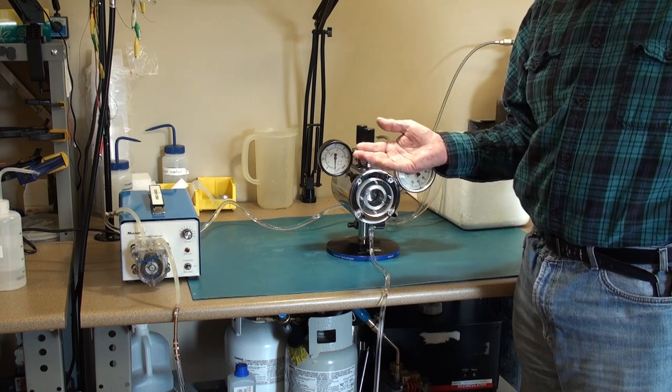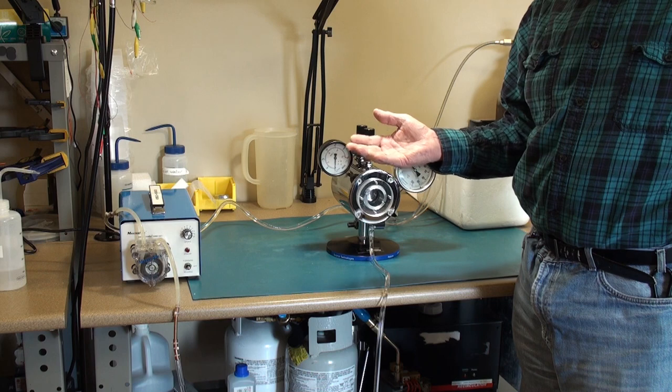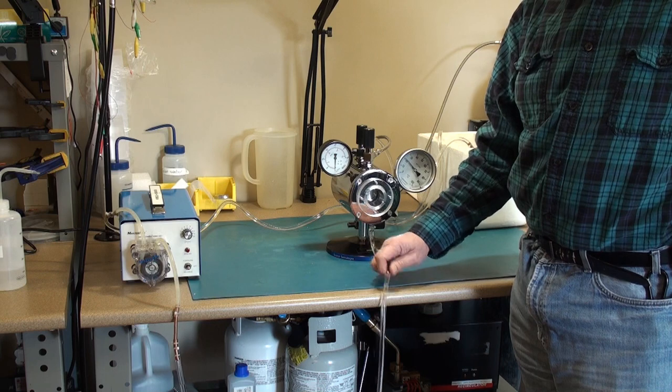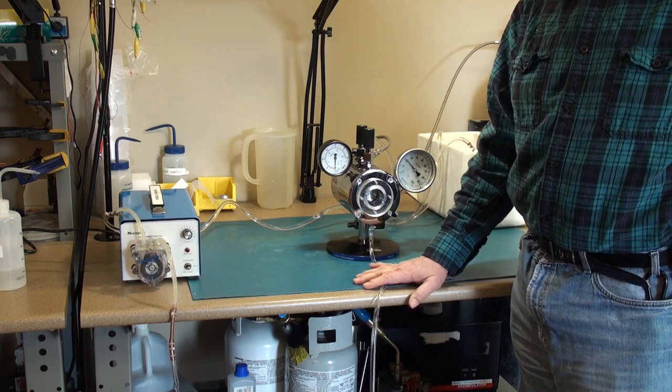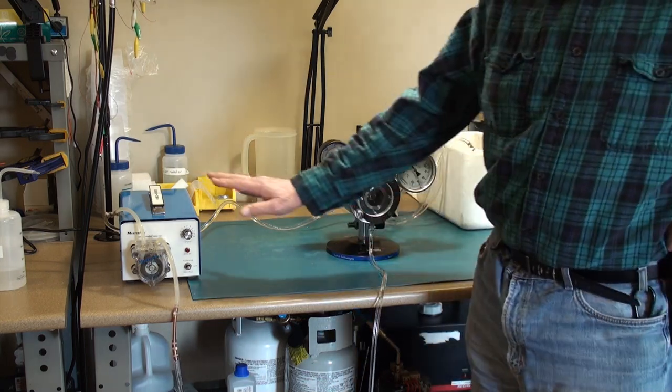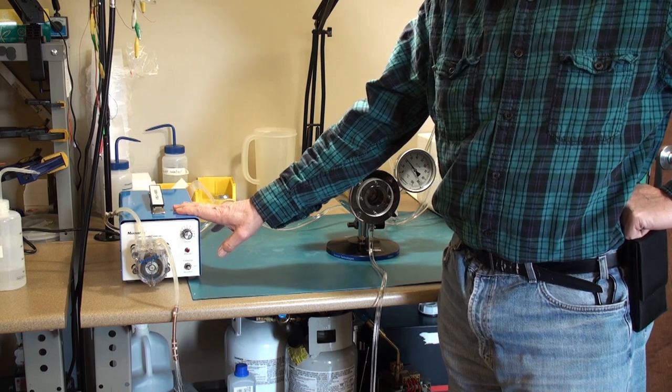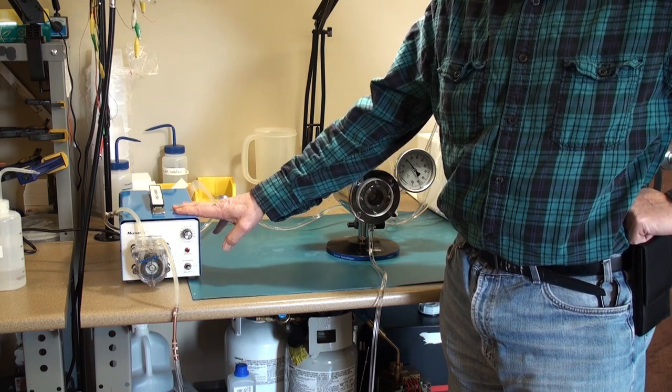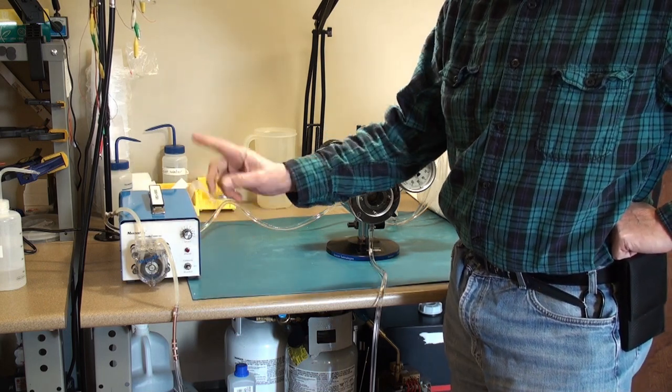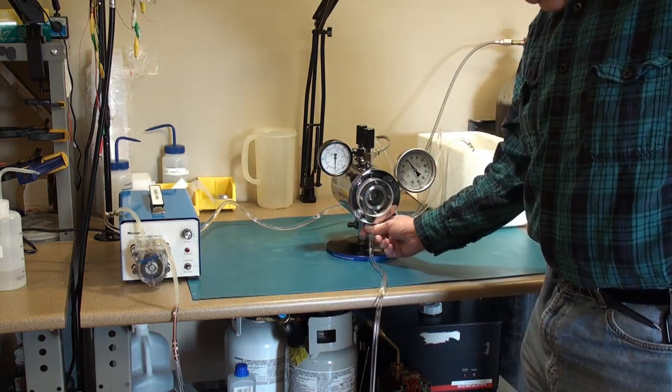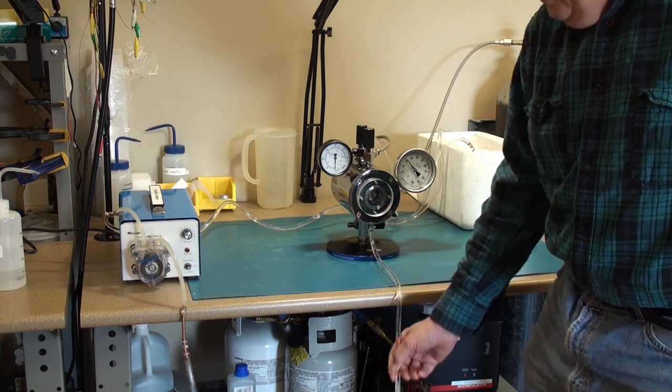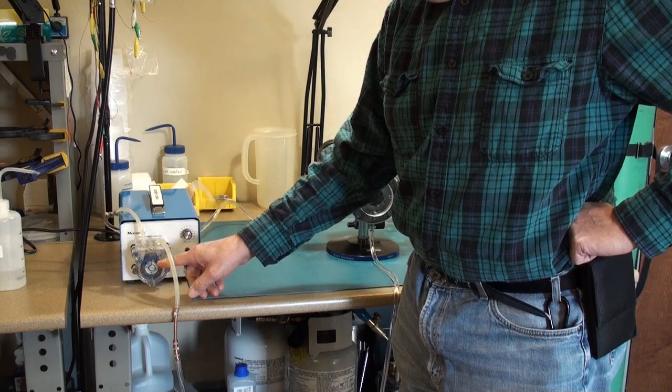Or even lower if I use something like antifreeze or ethylene glycol as a circulating cooling media. Here I'm just using water that's in all these tubes. I have a used recirculator pump, a peristaltic pump that I got off of eBay. It serves the purpose quite well to circulate the fluid.